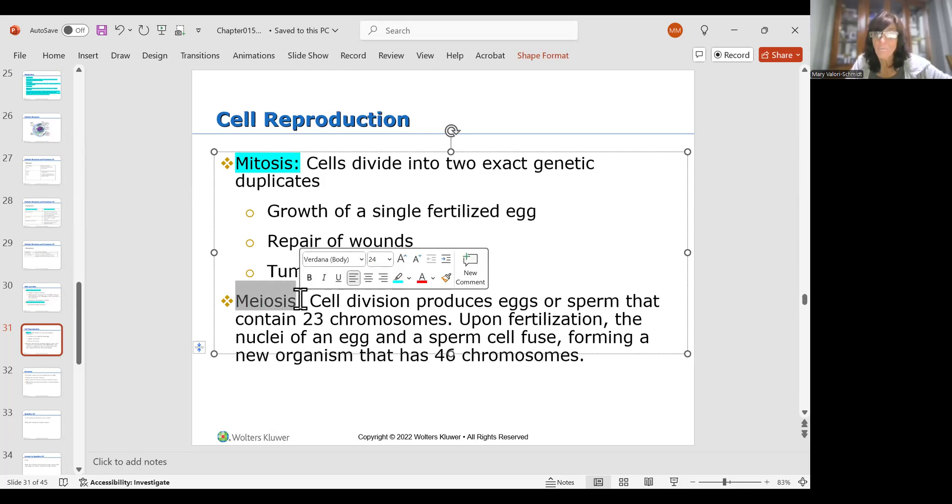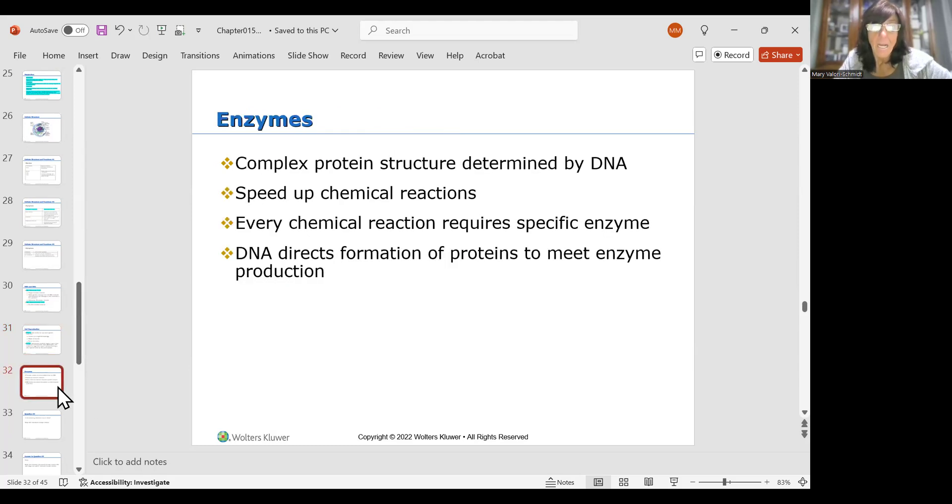Meiosis, that cell division that produces eggs and sperm, it only has half of the chromosomes you need. So meiosis, the cell division, you have eggs or sperm and each has 23 chromosomes. But when they fuse together, it creates a whole new organism that has 46 chromosomes. So that's what meiosis is. We're not going to get into enzymes.